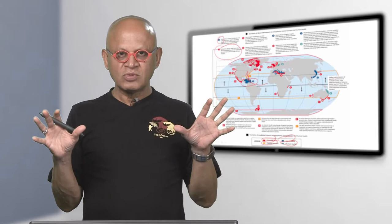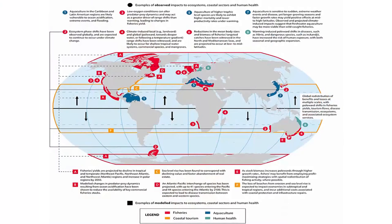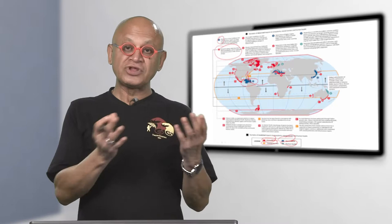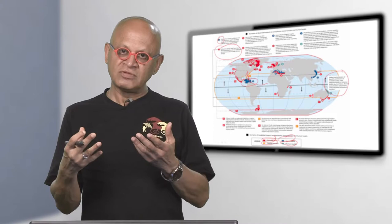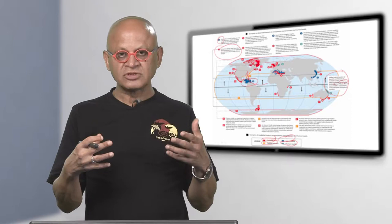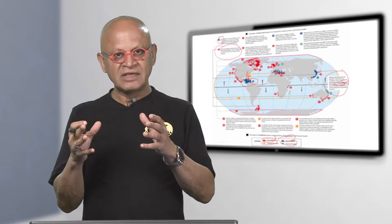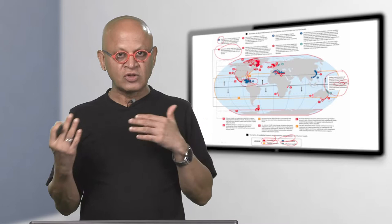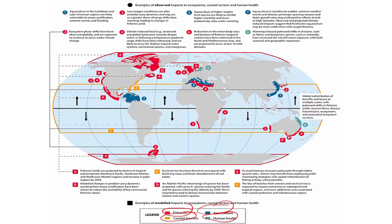Let's look at these impacts on a global scale across different regions and slightly different systems. Here we are going to look at fisheries, aquaculture, human health, and coastal tourism. These are combined because they are interrelated — fisheries and aquaculture are both part of the food system and a global economy, and coastal tourism and human health are also related.